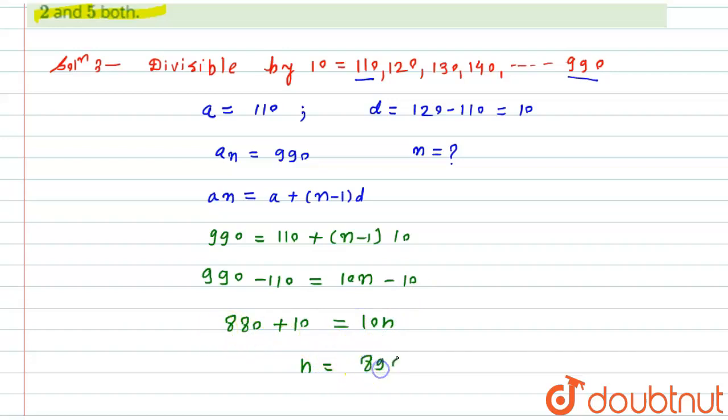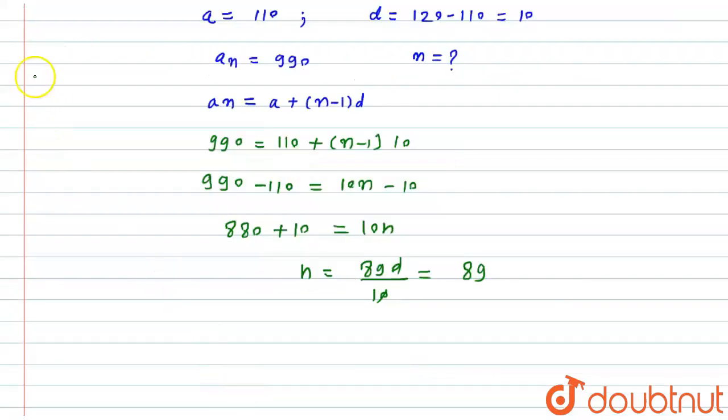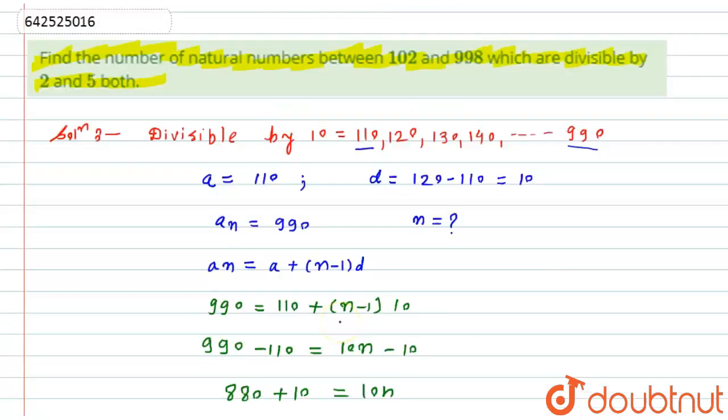Here I will get the value of n equals 880 plus 10, which is 890, and this 10 will divide the numerator, so the zeros get cancelled and we get n equals 89. Hence we got the total natural numbers between 102 and 998 as n equals 89.